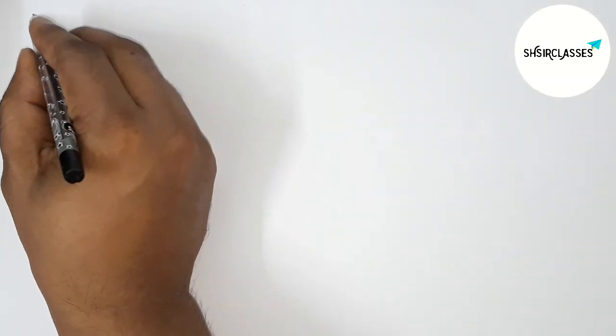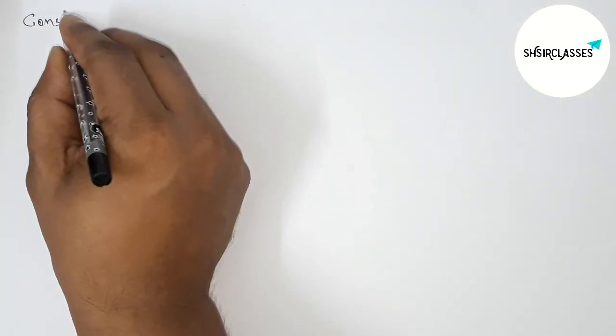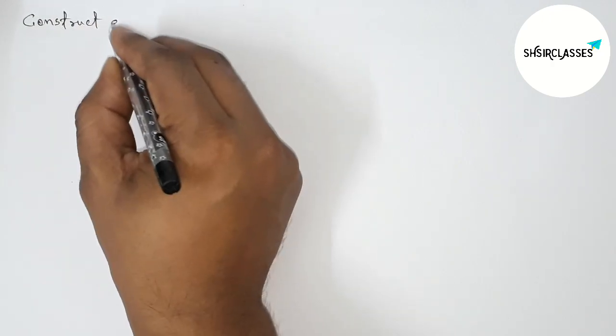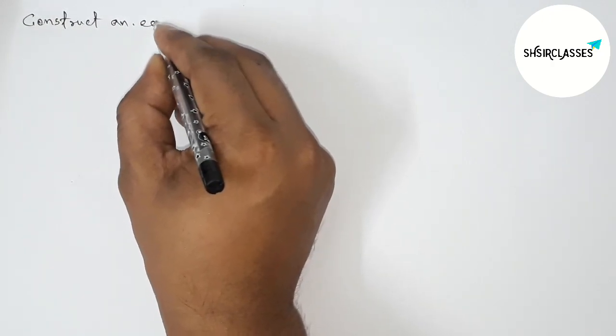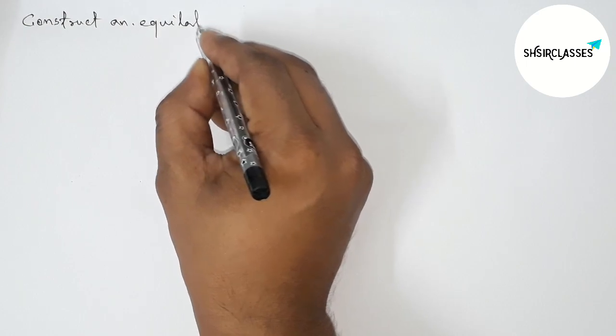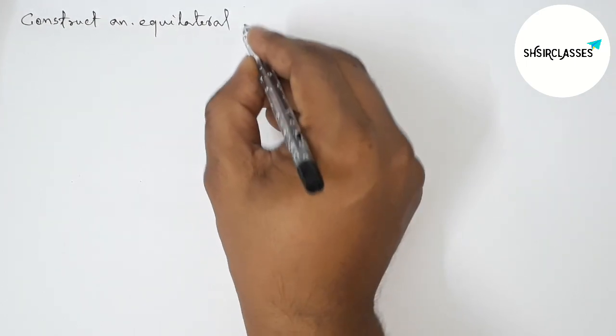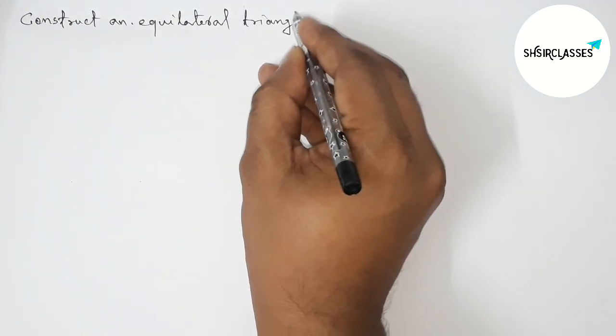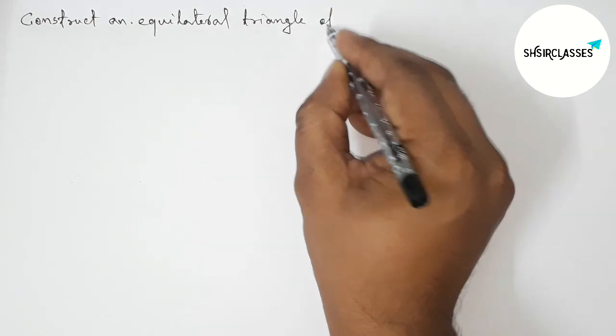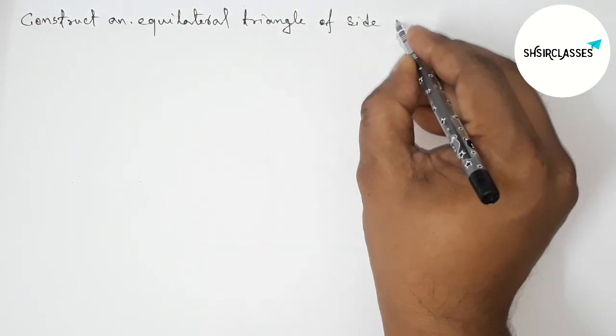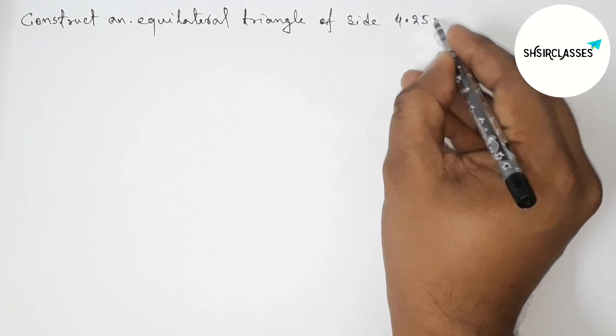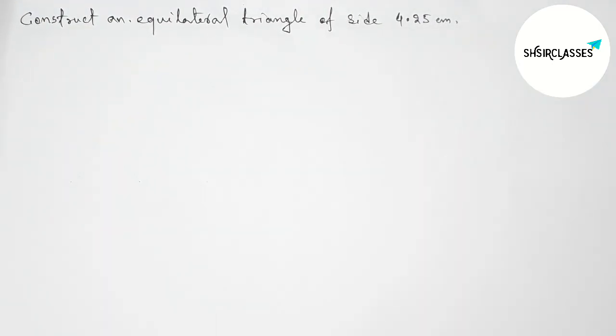Hi everyone, welcome to Service Share Classes. Today in this video we have to construct an equilateral triangle of each side 4.25 centimeter in an easy way. Please watch the video till the end. Let's start.